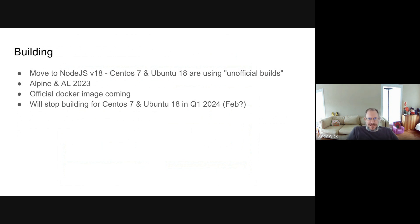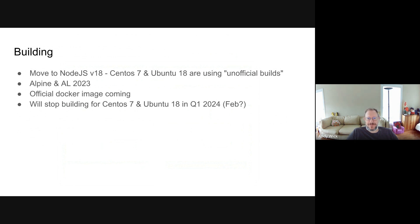For building Arkemi, the biggest thing is we're moving to Node.js v18 — previously we were on v16, which has been discontinued. Unfortunately, there are no official builds for CentOS 7 and Ubuntu 18 for Node 18, so we're using what are termed unofficial builds, which are still built by the Node.js folks but just not supported. We think this is okay because we're going to stop supporting CentOS 7 and Ubuntu 18 in Q1 anyway — both distributions are not being updated well, and if you're on either you should upgrade soon. We've also added Alpine and Amazon Linux 2023 support, and we're hoping to have our official Docker image coming soon based on Alpine.